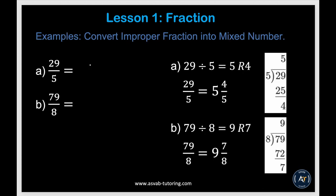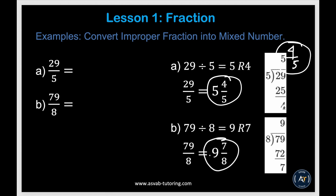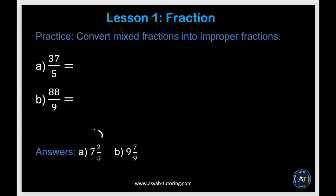Now we'll learn how to convert an improper fraction into a mixed number. Anytime you see an improper fraction in a word problem, you should turn it into a mixed number. Simply divide: 29 divided by 5 — 5 goes into 29 five times (5 times 5 is 25), with a remainder of 4, giving you 5 and 4 over 5. Similarly, 79 divided by 8 gives 9 with remainder 7, so 9 and 7 over 8. Try the practice problems and make sure you get these answers.